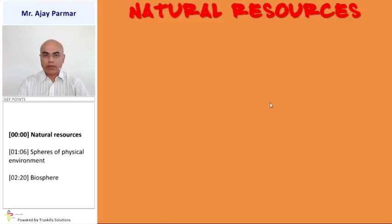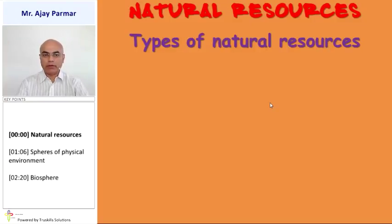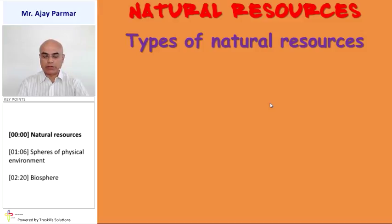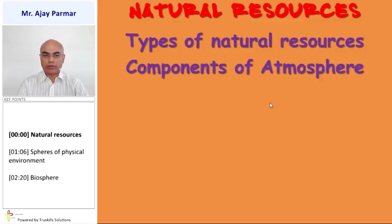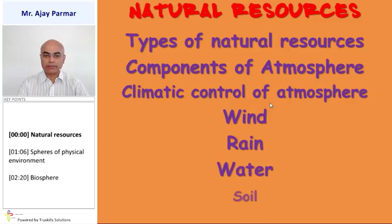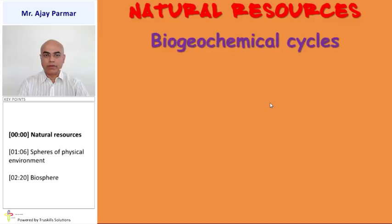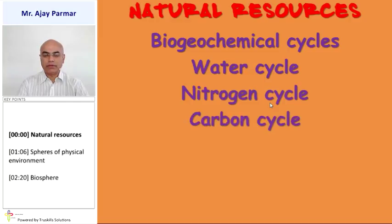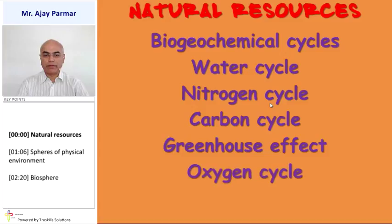Natural Resources. In this chapter, we shall study about the types of natural resources, the components of atmosphere, climate control of atmosphere, wind, rain, water, soil, energy, biogeochemical cycles, water cycle, nitrogen cycle, carbon cycle, greenhouse effect, oxygen cycle, and ozone.